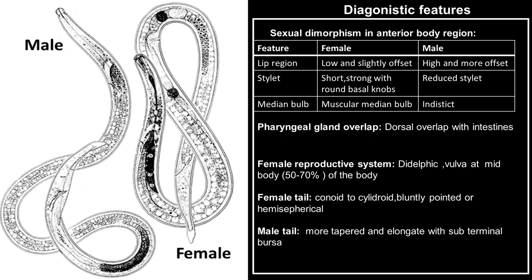Away from the sexual dimorphism, these nematodes have a dorsal overlap of the pharyngeal glands with the intestines. Furthermore, females have a didelpic reproductive system with the vulva located at 50 to 70 percent of the body. And lastly, their tail is bluntly pointed or hemispherical.